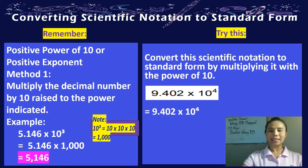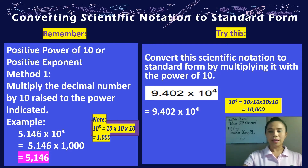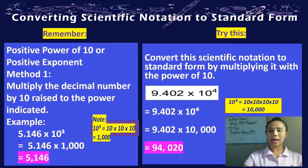If you have written 9.402 times 10 to the fourth, it means you have to multiply 9.402 with the power of 10, which is 10 times 10 times 10 times 10, and that is equivalent to 10,000. Multiplying 10,000 with 9.402 means you get 94,020. Did you get it correctly? Great job!